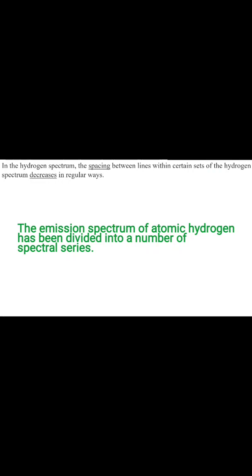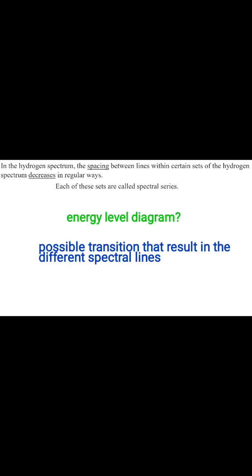The emission spectrum of atomic hydrogen has been divided into a number of spectral series. In the hydrogen spectrum, the spacing between lines within a certain set decreases in a regular way, and each of these sets is called a spectral series. Let's look at the following energy diagram showing all the possible transitions that result in the different spectral lines for the Lyman, Balmer, Paschen, Brackett, and Pfund series.